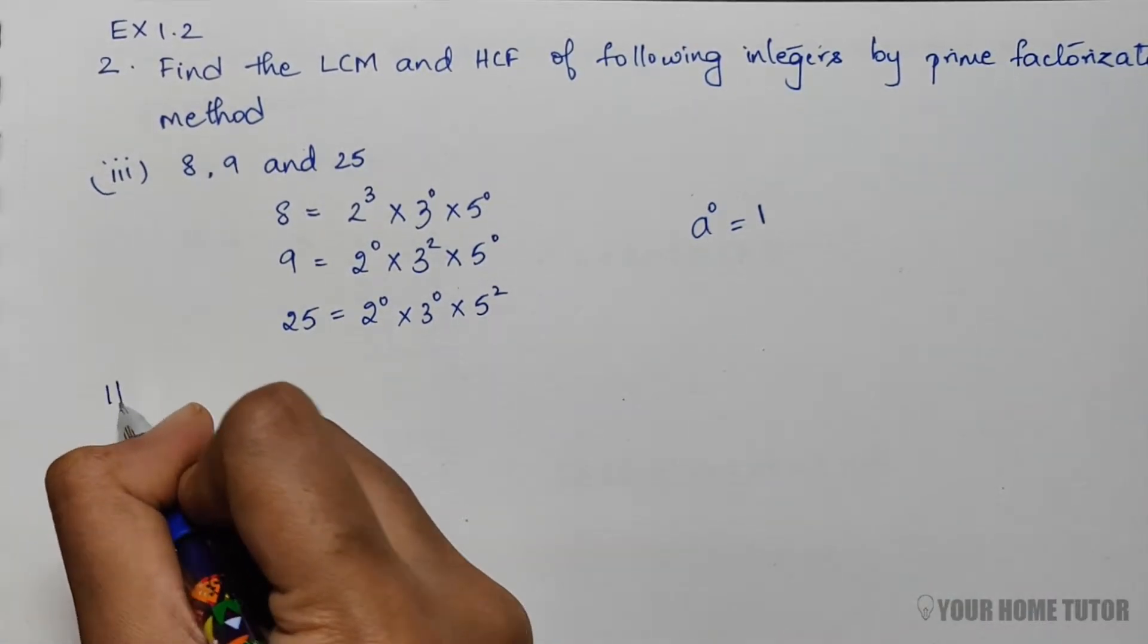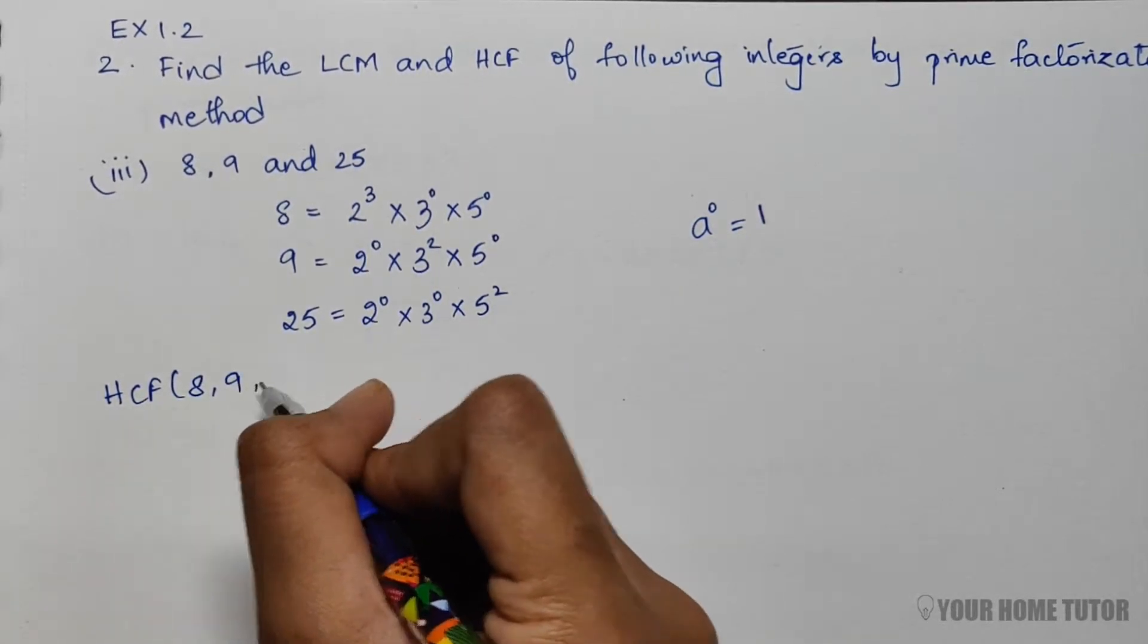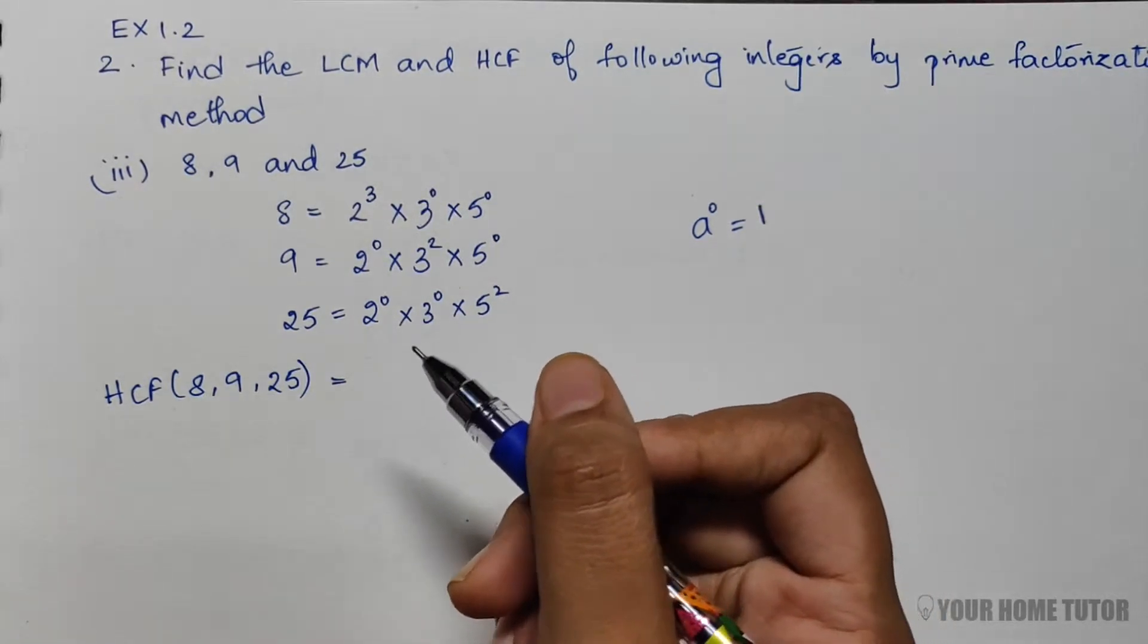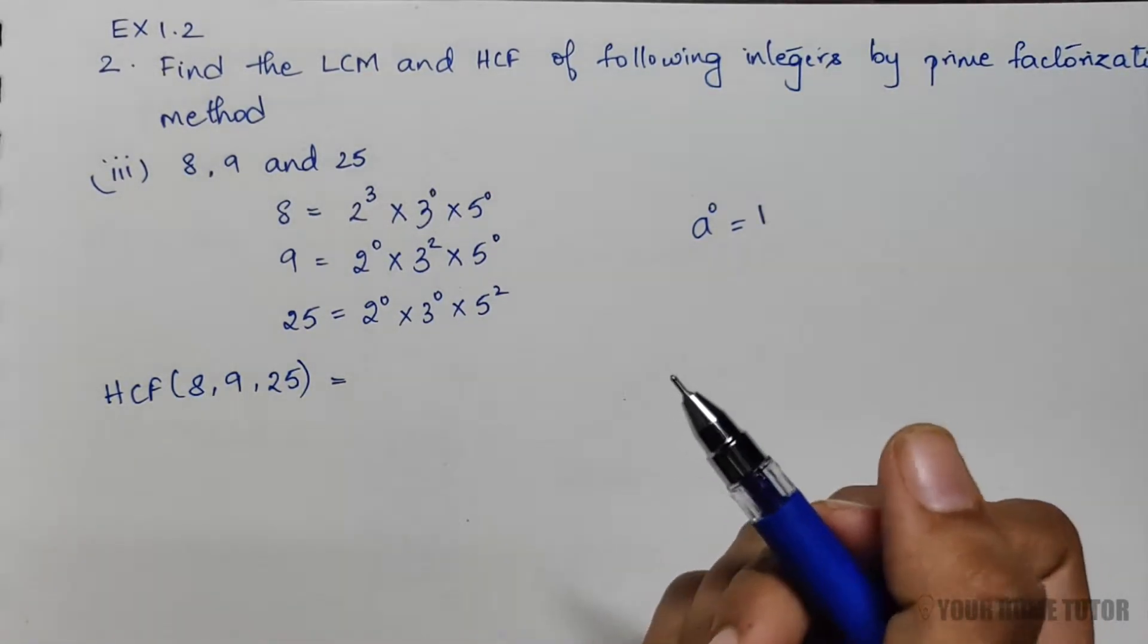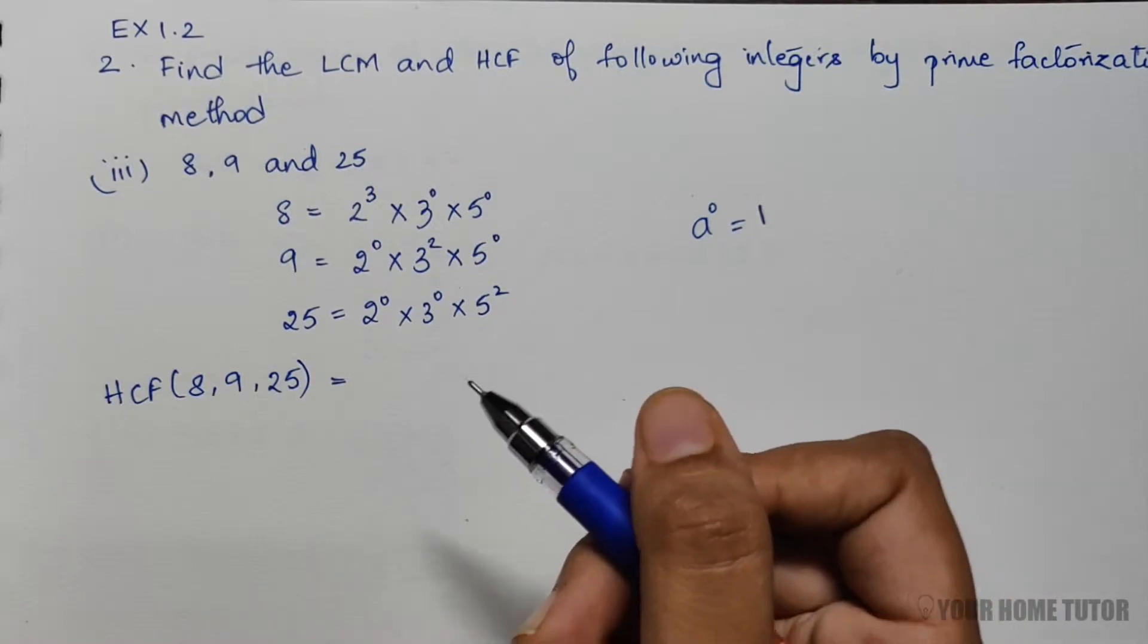To find HCF of 8, 9, and 25, we know that the product of the smallest power of each of the prime factors of the numbers is equal to the HCF.